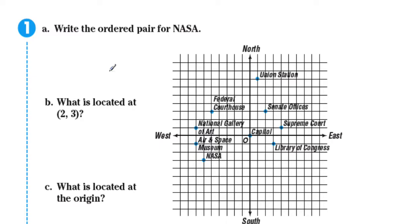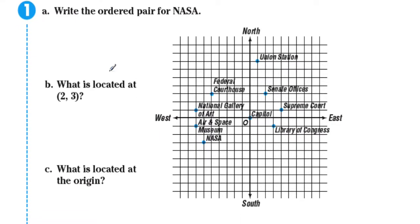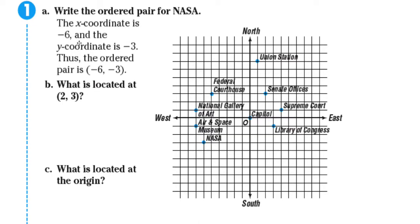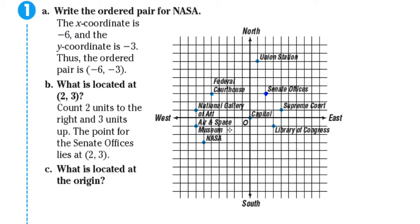Moving on — write the ordered pair for NASA. You are given a coordinate system. Analyzing the problem, the x-coordinate is negative six and the y-coordinate is negative three. Therefore, the ordered pair is negative six, negative three. What is located at two, three? If you find two, three — that's going to be the Senate offices. Count two units to the right and three units up from the origin. The point of the Senate offices is two, three.